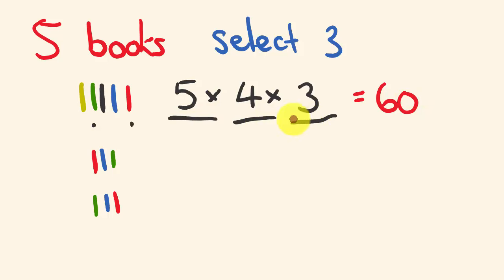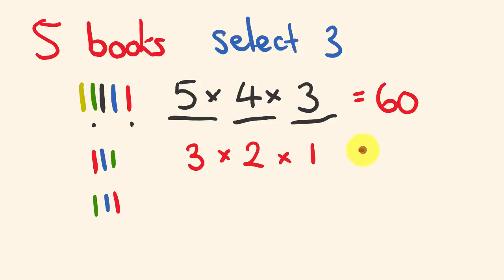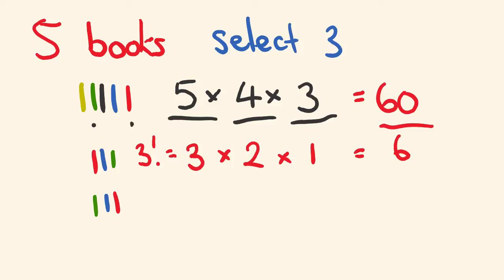It's fairly logical when you think about it. We look at our three spaces and ask: how many different ways can three spaces be ordered? We have three spaces to choose from, then two, then one — so that's three factorial, three times two times one, which is six different ways. We divide sixty by six, and this gives us the number of combinations as opposed to permutations: 60 divided by 6 equals 10.